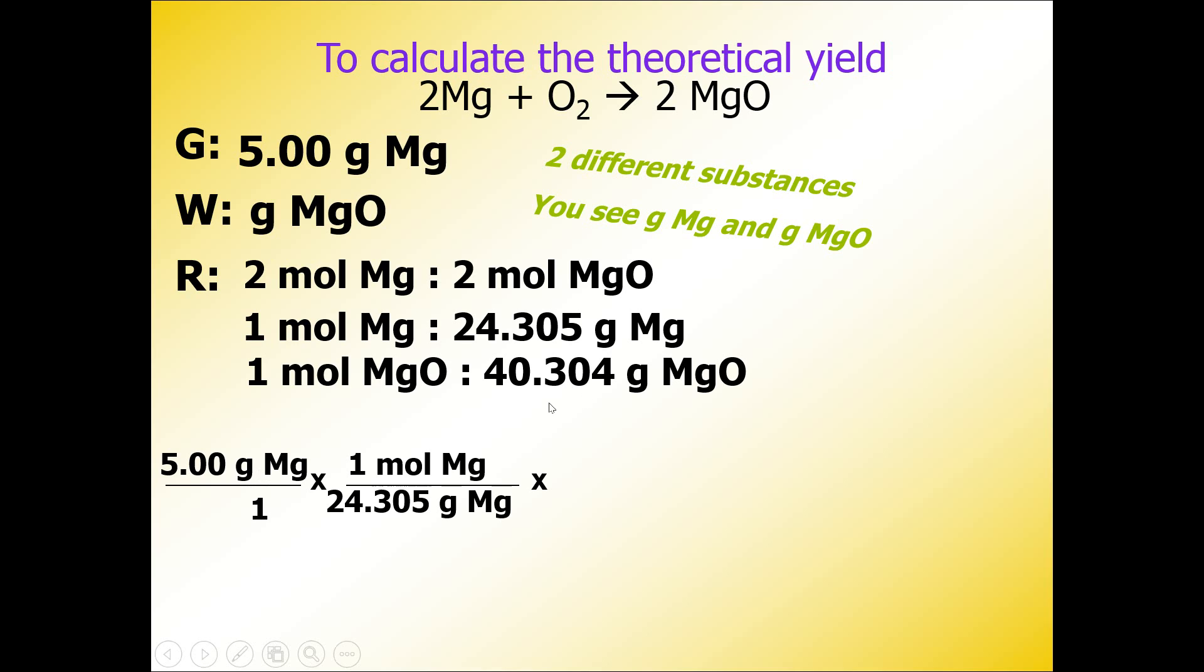Now we need moles of magnesium to cancel out diagonally, so I'm going to use the mole ratio: 2 moles Mg in the bottom to 2 moles MgO on the top. Now I need moles of MgO to cancel out, so 1 mole MgO on the bottom and 40.304 grams MgO on the top.